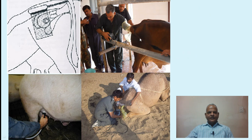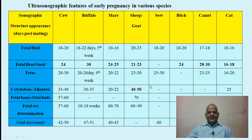Here you can see pictures of the transducer inserted in the rectum in cattle using a portable probe, A-mode ultrasound used in pigs, and the same ultrasound used in camels, which must be properly restrained.